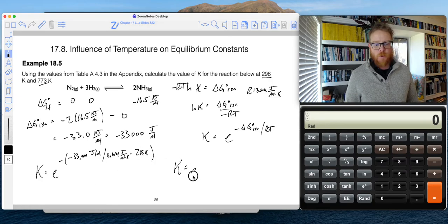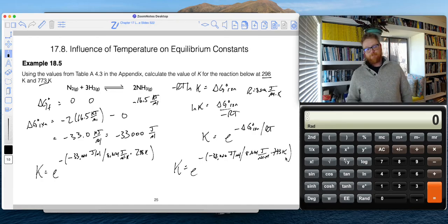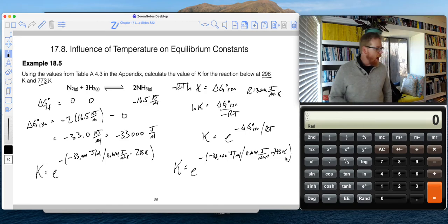And then we'll do another calculation, setting it up very similarly. And now that's divided by 8.314 joule per mole K times 773 Kelvin.